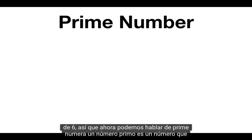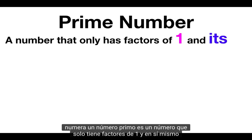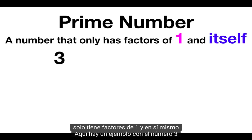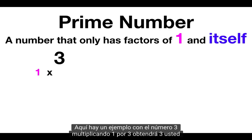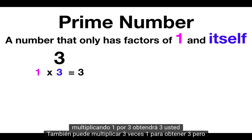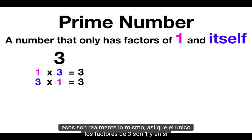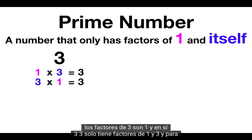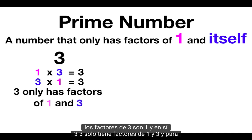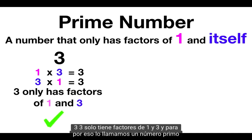So now we can talk about prime numbers. A prime number is a number that only has factors of 1 and itself. Here's an example with the number 3. Multiplying 1 times 3 will get you 3. Those are really the same, so the only factors of 3 are 1 and itself, 3. And for that reason we call it a prime number.